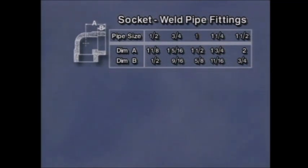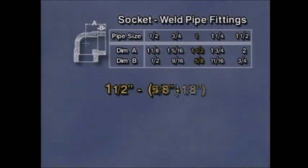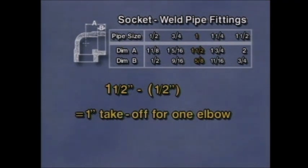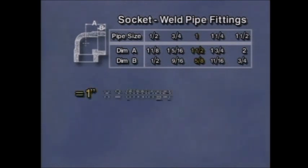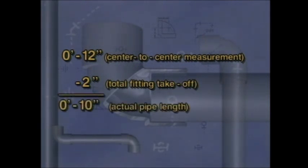For example, a one-inch socket weld 90-degree elbow is one and a half inches from end to center, dimension A. The make-up, dimension B, is five-eighths of an inch. But with socket welds, the pipe must be backed out one-eighth of an inch to allow for heat expansion, so the true make-up is four-eighths, or half an inch. Subtract the half-inch make-up from one and one-half inches, and the takeoff for one fitting is one inch. Since there are two fittings, multiply that by two, and the total takeoff is two inches. Subtract two inches from the center-to-center measurement and you get the actual length of pipe required — in this case, ten inches.